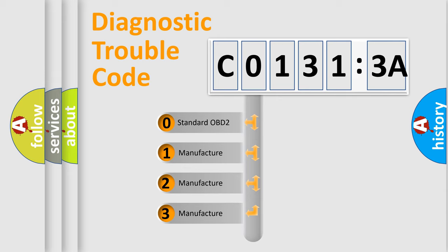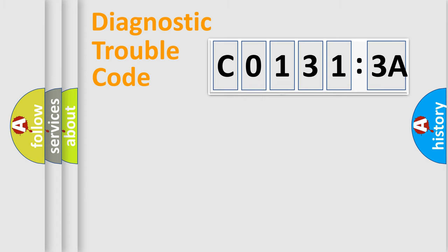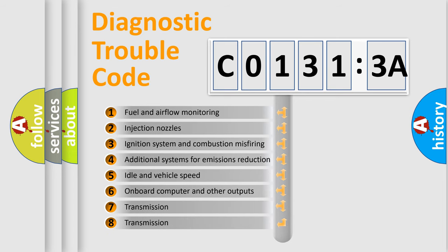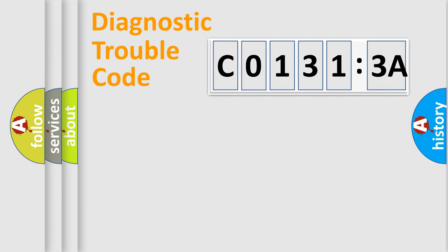If the second character is expressed as 0, it is a standardized error. In the case of numbers 1, 2, or 3, it is a car-specific error. The third character specifies a subset of errors. The distribution shown is valid only for the standardized DTC code. Only the last two characters define the specific fault of the group.